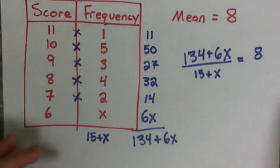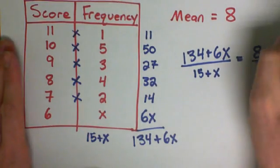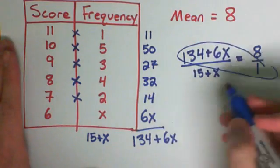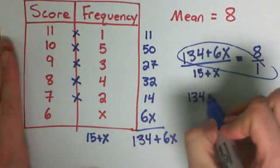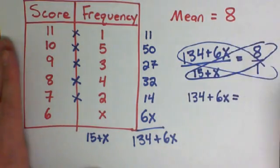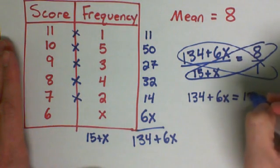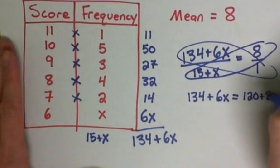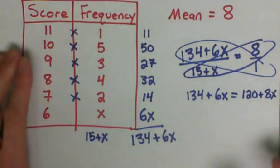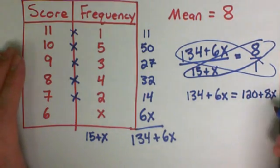Now that looks really ugly, but what we can do is some cross multiplication. If I stick a 1 under here, I'm going to cross multiply. So anything times 1 is still itself, 134 plus 6x. But 8 times 15 and 8 times x. 8 times 15 is 120. 8 times x is 8x.